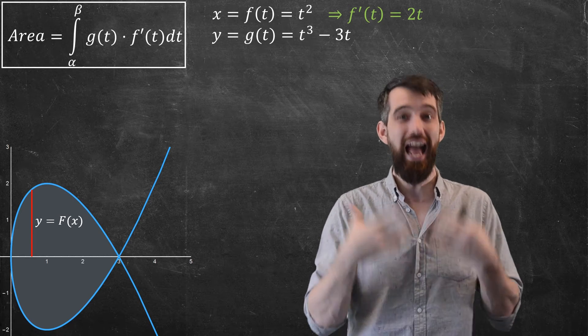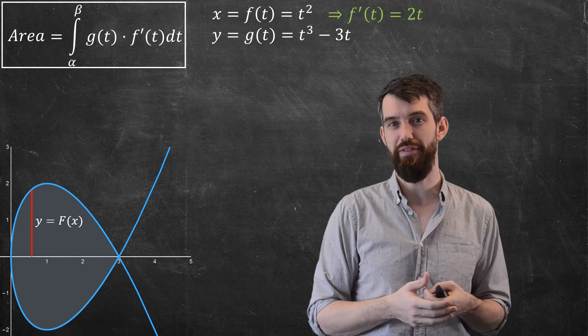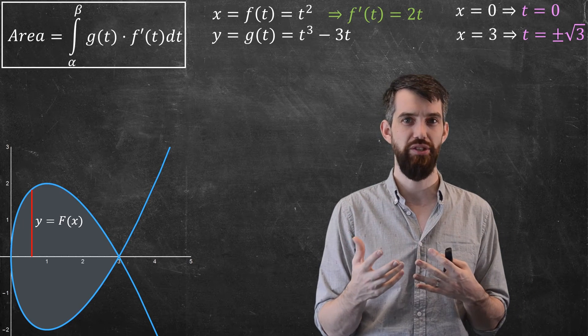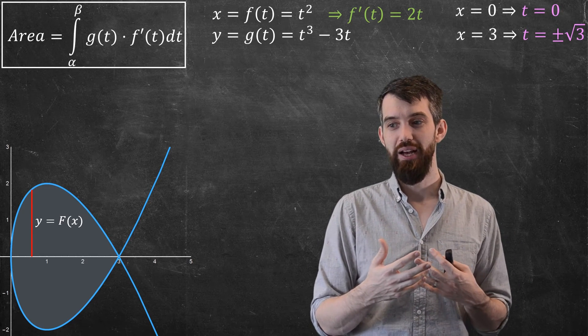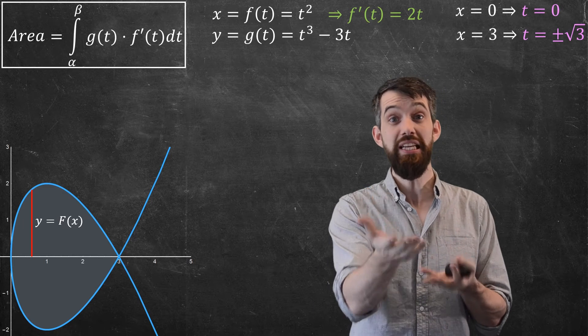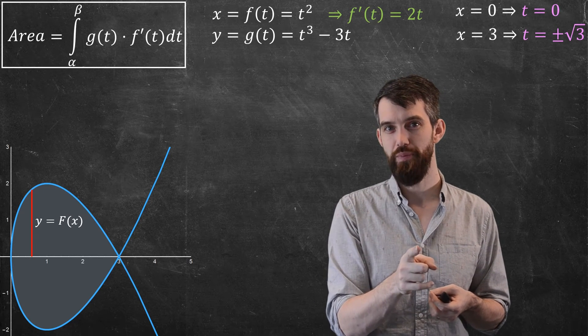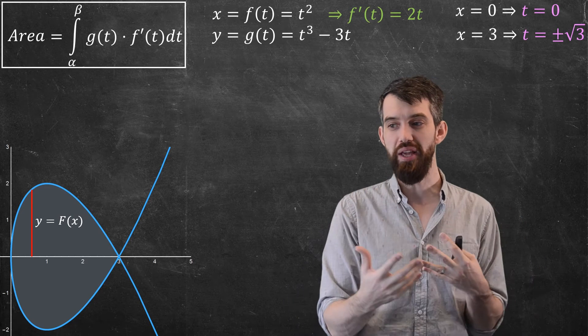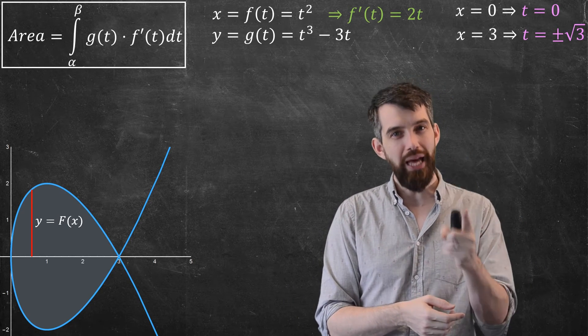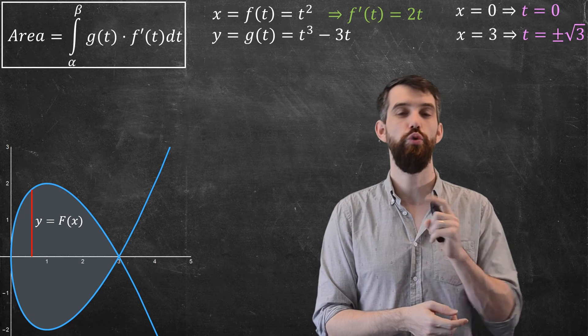Well, what are the endpoints for just the top half of this? Well, if I plug in x equal to 0, this is sort of the left endpoint in x, plugging in x equal to 0 gives me that t is equal to 0. So when t is 0, I'm at that leftmost point. And then when x is equal to 3, I get that t is either equal to plus or minus the square root of 3.